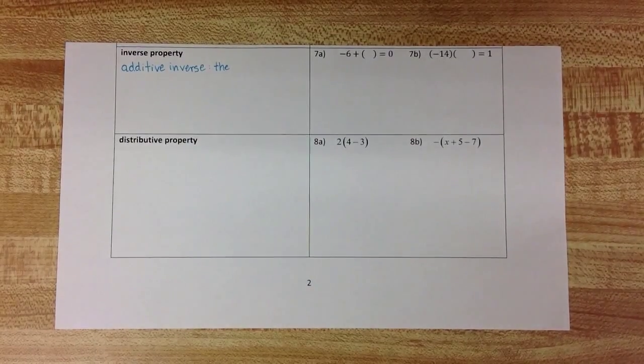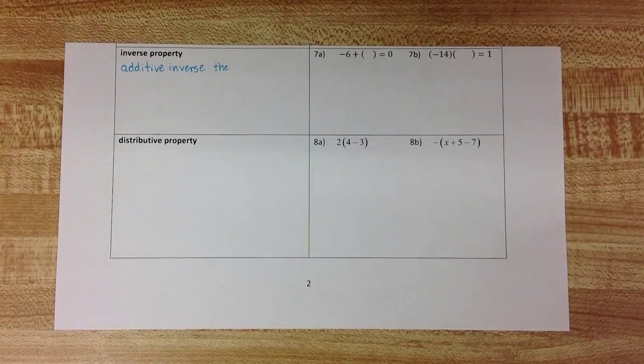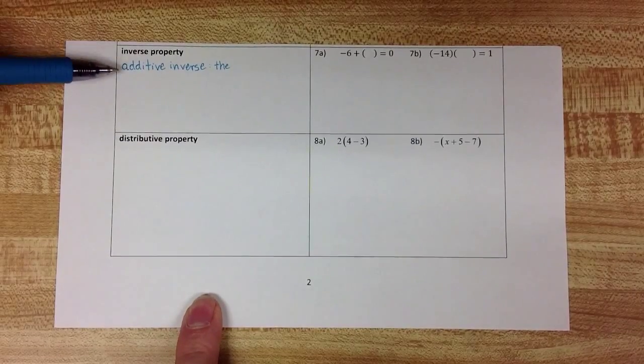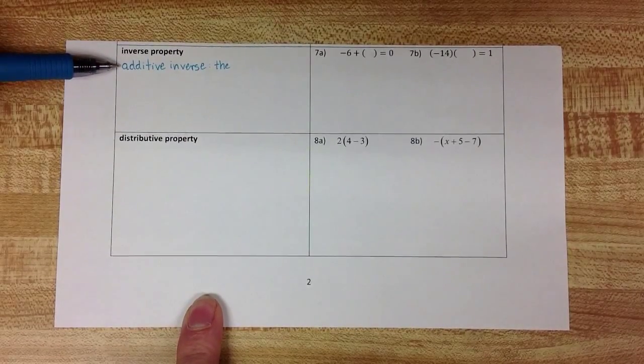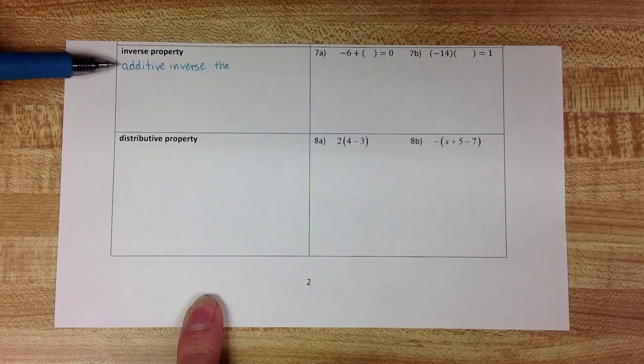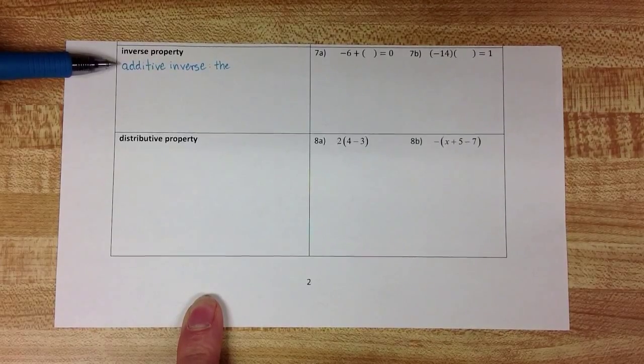We have two more properties to look at in this section. The first one is the inverse property. And we spoke a little bit about the additive inverse earlier in the semester when we were looking at adding and subtracting negative numbers.